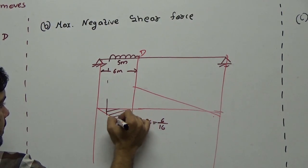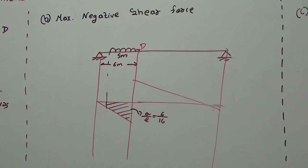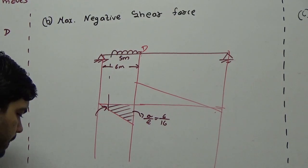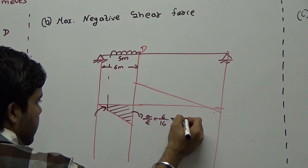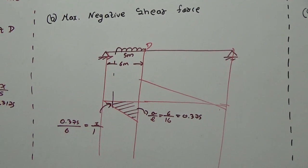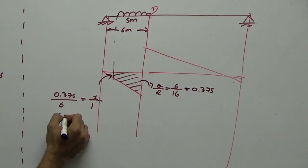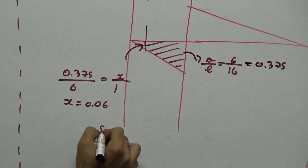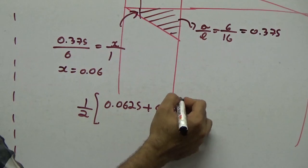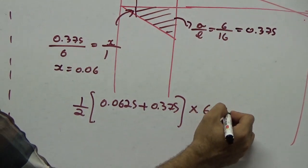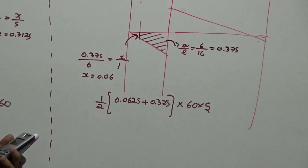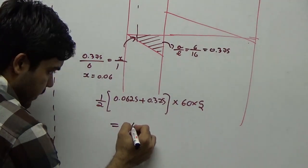By interpolation, the ordinate at the other end of the UDL is 0.375 / 6 × 1 = 0.0625. The maximum negative shear force is then (0.0625 + 0.375) / 2 × 60 × 5 = 65.63 kN.